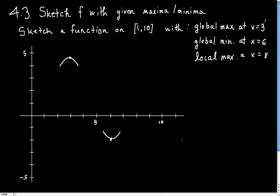Let's see. I'm going to have my global max here. I've taken care of that. I'm going to have my global min at x equals 6. I've taken care of that. And now, I just want a local max. This is supposed to say at, of course, at x equals 8.